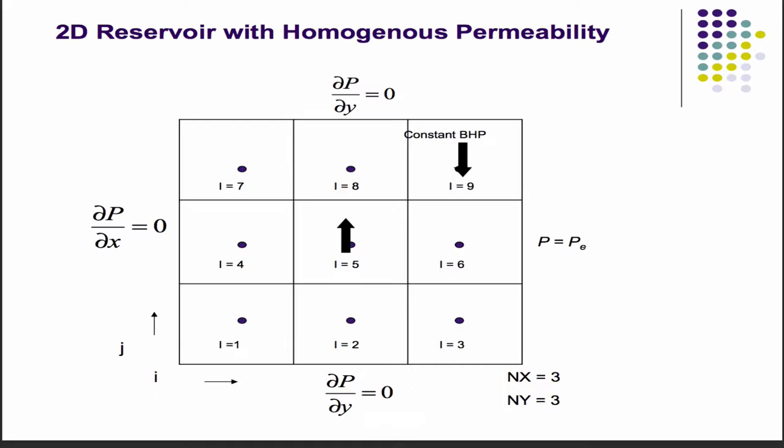And also, it's fully insulated, so there's no flow boundary conditions everywhere. Whereas here, there's a constant pressure boundary condition on this side, no flow everywhere else. There's a constant rate producer here, and a constant bottom hole pressure well there in nine.